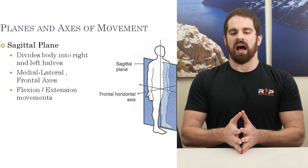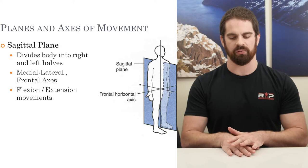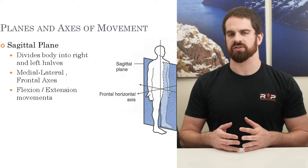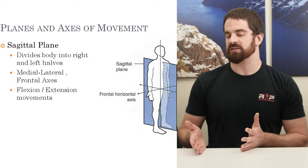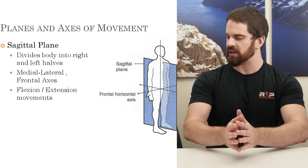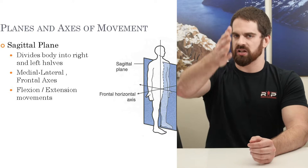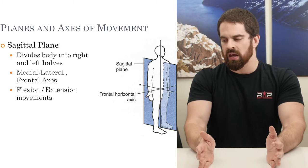Moving on, we need to start understanding planes of movement. Now that we have some foundational directional terms — anterior, posterior, medial, lateral — we're going to describe the body on a simple biomechanical level using different planes of motion. The first and probably easiest to understand is the sagittal plane, which is an imaginary plane that cuts the body into symmetrical right and left halves.